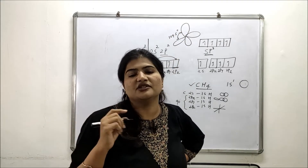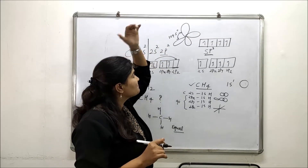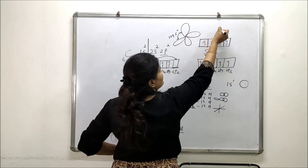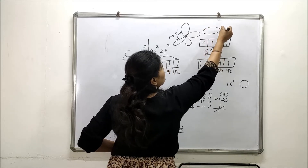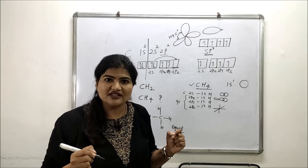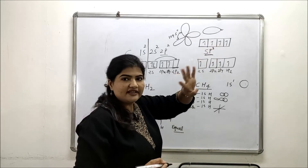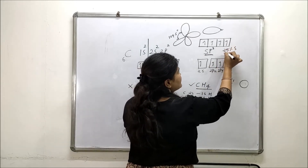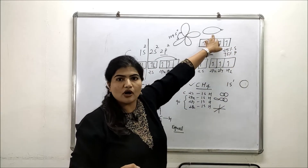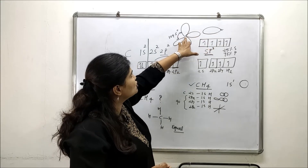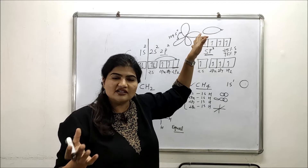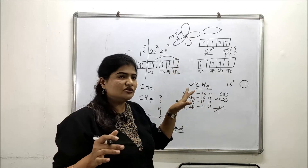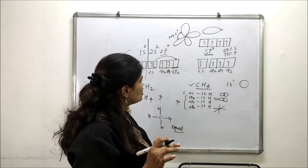The bond angle is 109.5 degrees, or more precisely 109 degrees 23 minutes. The shape of each sp3 hybrid orbital has one large lobe and one very small lobe. The character is 25% s and 75% p, since one out of four is s. The small lobe doesn't extend far from the nucleus and doesn't participate in bond formation, so typically only the larger lobe is shown.